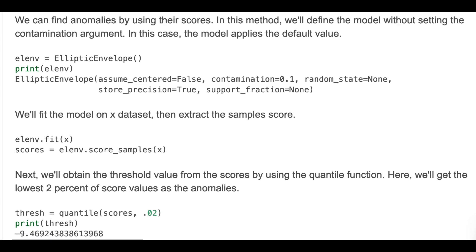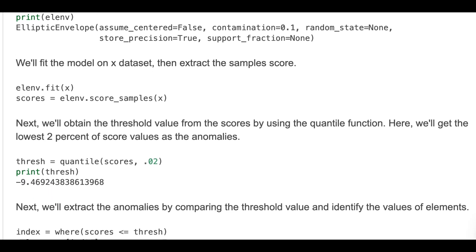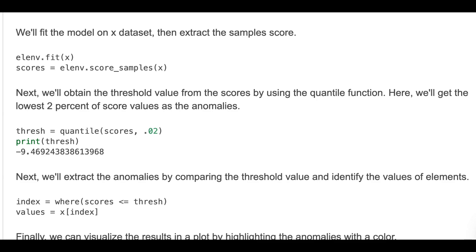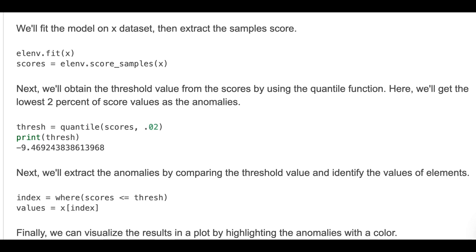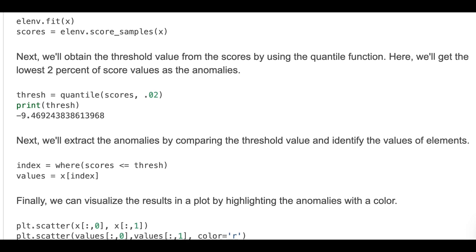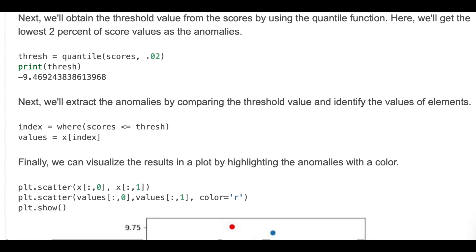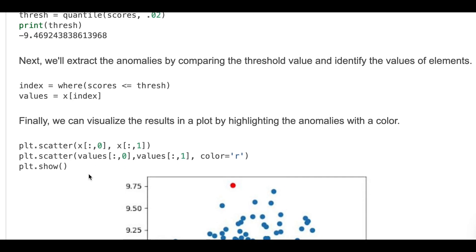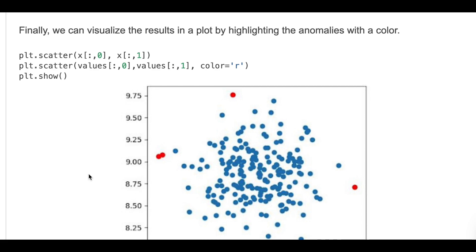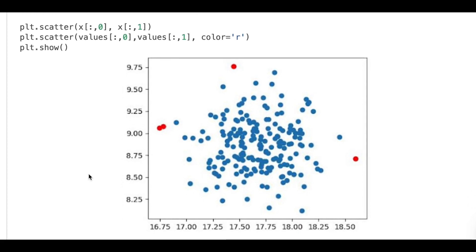We'll obtain the threshold value from the scores by using the quantile function. Here, we'll get the lowest two percent of score values as anomalies. Next, we'll extract the anomalies by comparing the threshold value and identifying the values of elements. We found the indexes and their values. Finally, we'll visualize the results in a plot by highlighting the anomalies with a color. As you can see, we've got the same result.